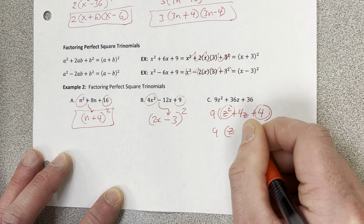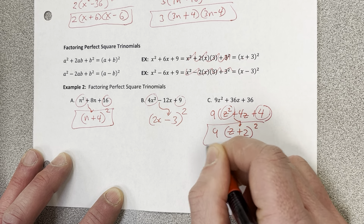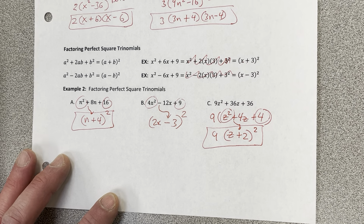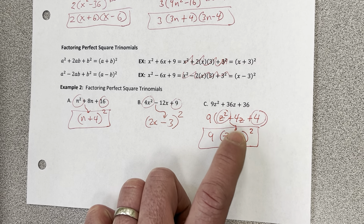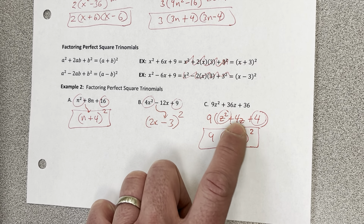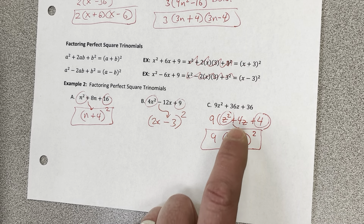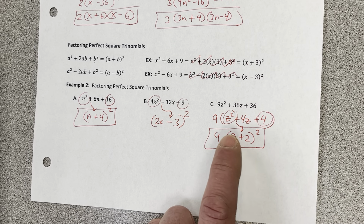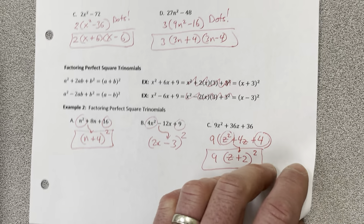After factoring out 9, we're left with a perfect square trinomial, so we write 9 times a binomial squared. z times z gets z squared, two times two gets four, plus sign — and we've factored it. This saves so much time over the AC method. But I warn you: if you don't check the middle term you may be tricked. Here, 2 times z is 2z, doubled is 4z — the answer checks out.